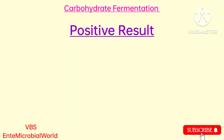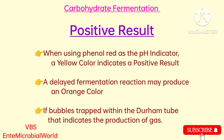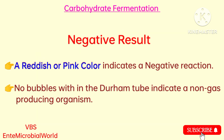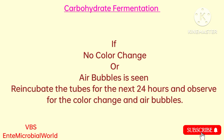Result: When using phenol red as the pH indicator, a yellow color indicates a positive result. A delayed fermentation reaction may produce an orange color. Bubbles trapped within the Durham tube indicate the production of gas. A reddish or pink color indicates a negative reaction. No bubbles within the Durham tube indicate a non-gas-producing organism. If no color change or air bubbles are seen, re-incubate the tubes for the next 24 hours and observe for color change and air bubbles.